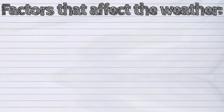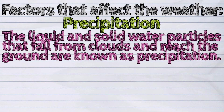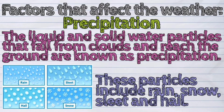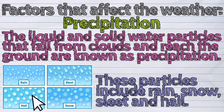Another factor is precipitation. The liquids and solid water particles that fall down from clouds and reach the ground are known as precipitation. These particles include rain, snow, sleet, and hail.